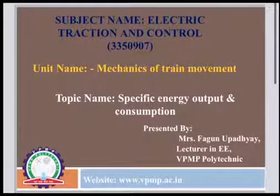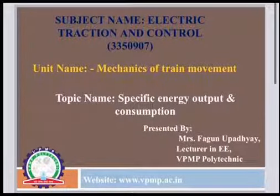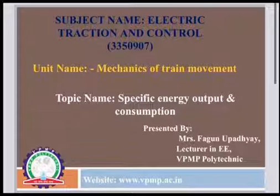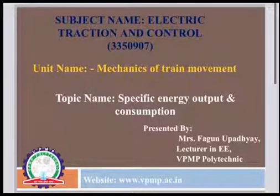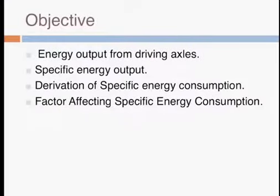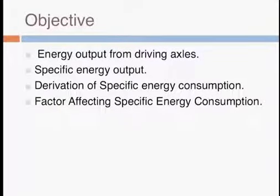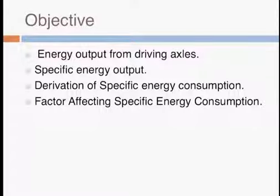Welcome to all students. This subject is electrical traction and control, and the topic we will discuss today is specific energy output and consumption, from chapter two: mechanics of train movement. The objectives covered will be energy output from driving axles, the specific energy output, specific energy consumption derivation, and factors affecting it.